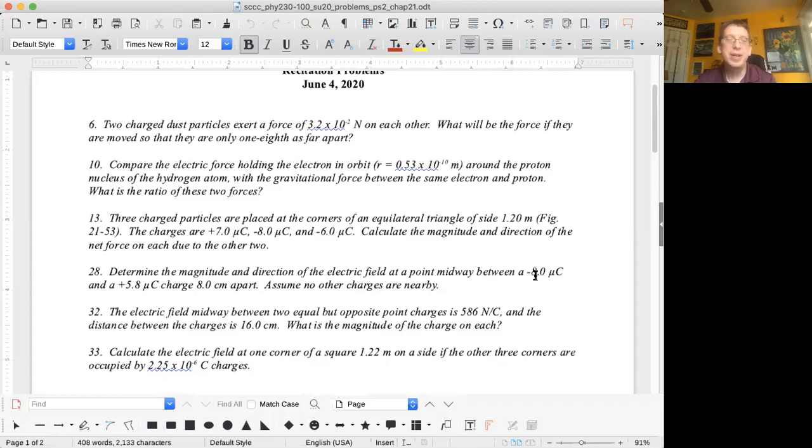Then number 28, determine the magnitude and direction of the electric field at a point midway between a negative 8.0 microcoulomb and a positive 5.8 microcoulomb charge 8.0 centimeters apart. Assume no other charges are nearby.